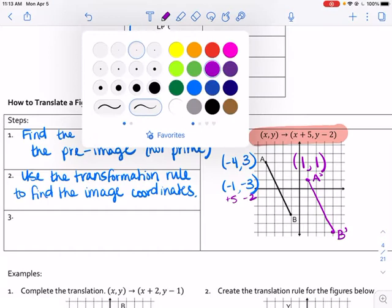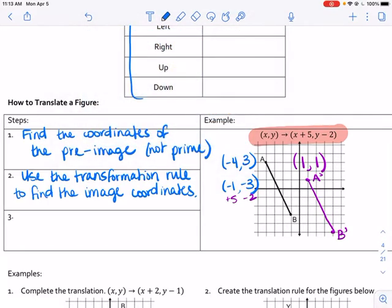So I actually did this last step. I found the image coordinates and then I drew. Draw the image. So I drew the image. Remember that's our primes. A prime, B prime. So this is the way to do it if you have the rule and you don't necessarily know what the rule means.